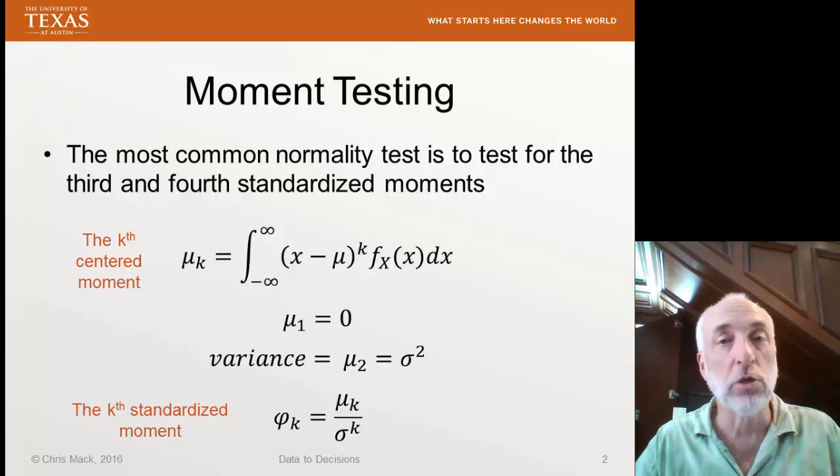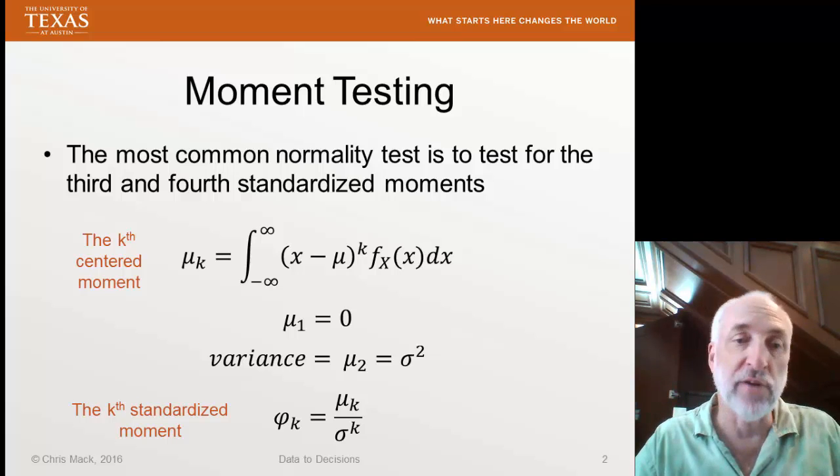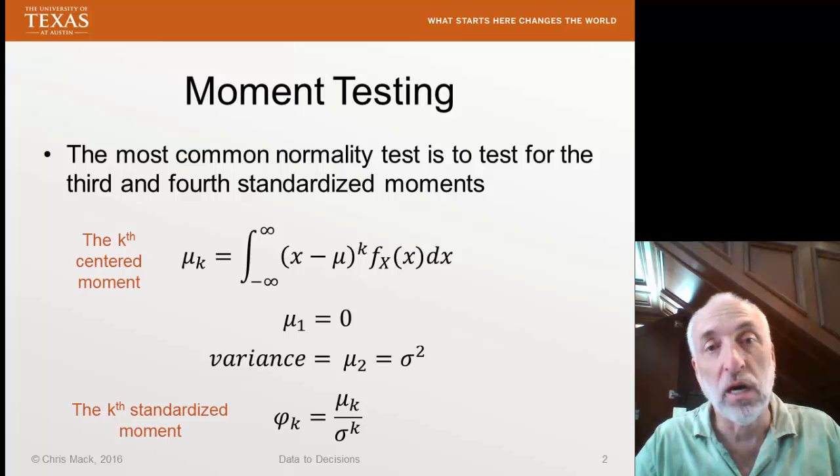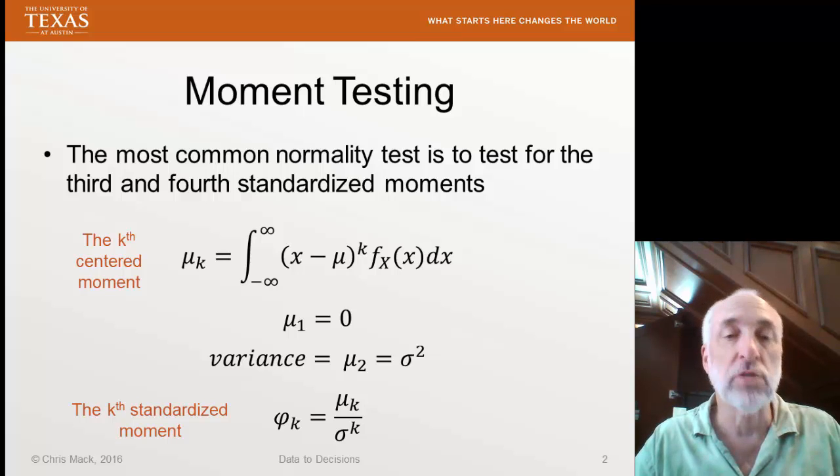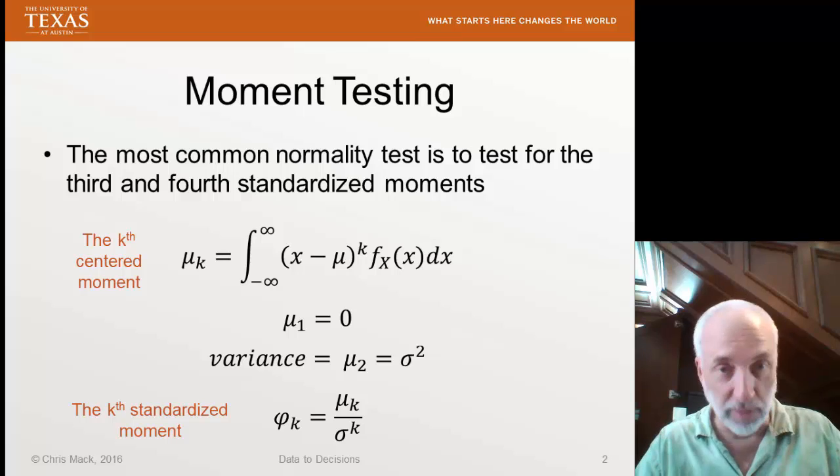In the last lecture, we looked at skewness testing. Skewness was the third standardized moment of a distribution, and today we're going to look at kurtosis, the fourth standardized moment.